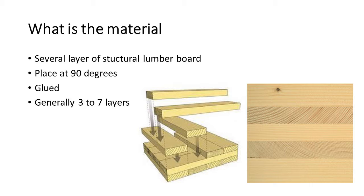CLT panels consist of several layers of structural lumber boards stacked crosswise, typically at 90 degrees, and glued together on their wide face and sometimes on the narrow face as well. A cross-section of a CLT element has at least three layers of boards placed orthogonally, alternating orientation to neighboring layers. In some configurations, consecutive layers may be placed in the same direction, giving a double layer to obtain specific structural capabilities.